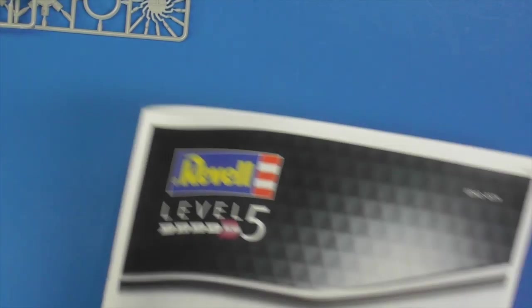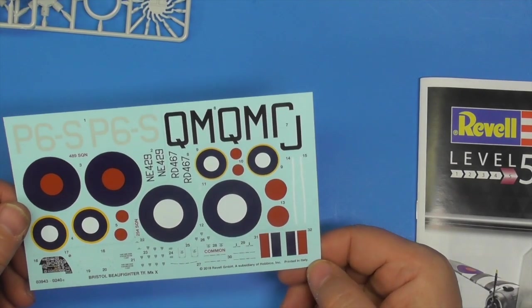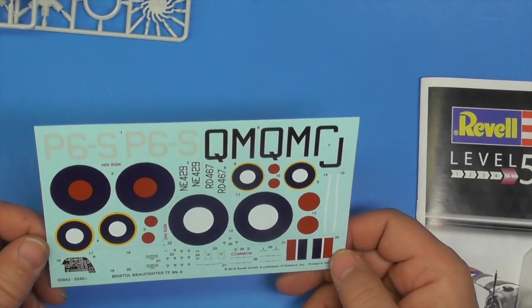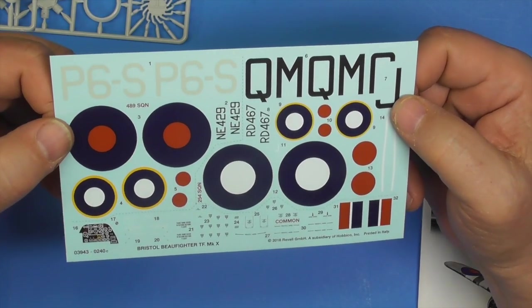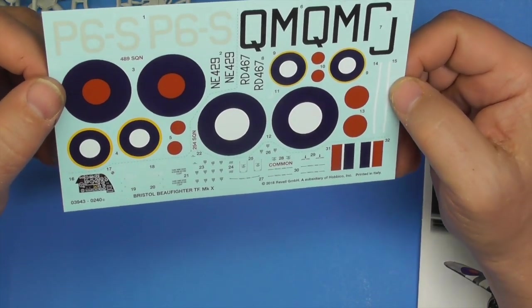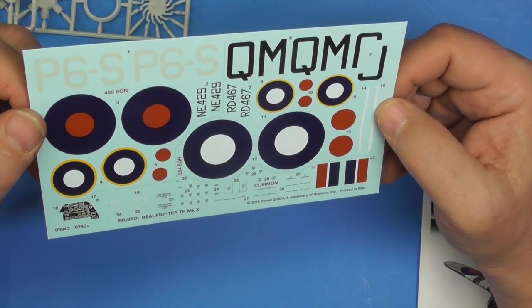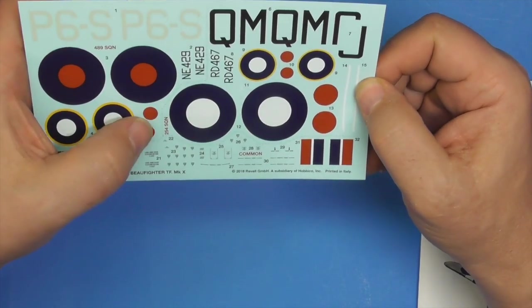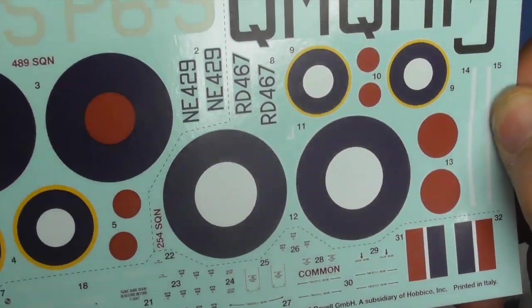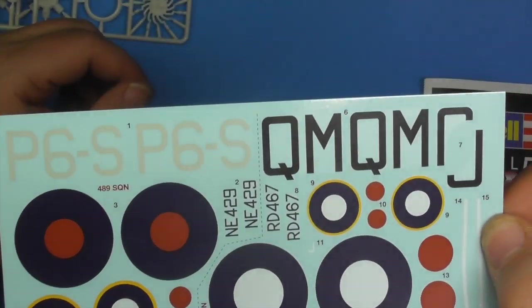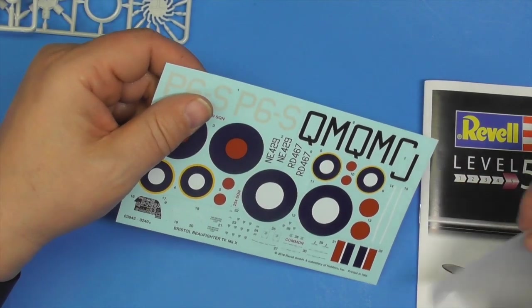And then we have instructions and decals. Printed in Italy, may or may not be Cartograph, but they didn't get credit if it was. But they're really nice, not overly glossy. The roundels look really good, instrument panel detail looks pretty good, a few stencils. So you got your 489 Squadron, your 254 Squadron, whichever one you're going to do. But yeah, they're nice and kind of matte and cut really close, not a lot of decal film except on these letters right here. These letters are connected, these letters are connected, but the rest of it looks really good. So good job with those.